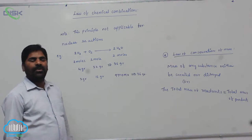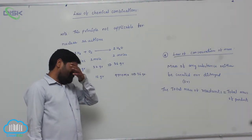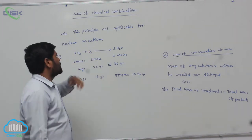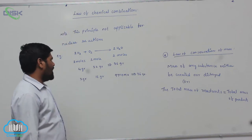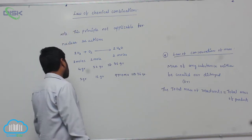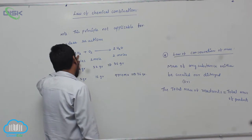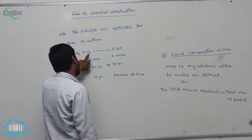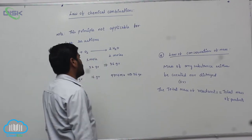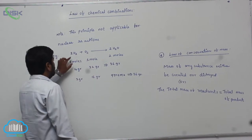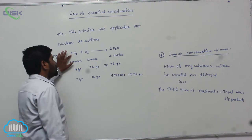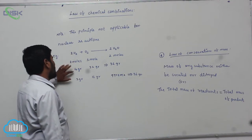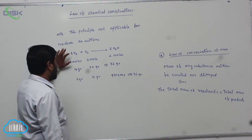So that is the reason why these are not applicable for which reactions? Nuclear reactions. For example, 2 moles of hydrogen react with oxygen to form 2 moles of H2O. Hydrogen is 2. So therefore, how many grams? 4 grams of hydrogen is involved.